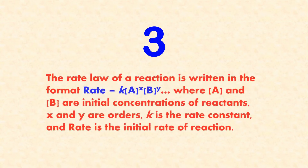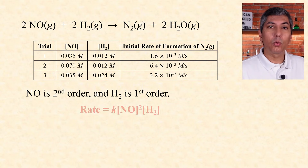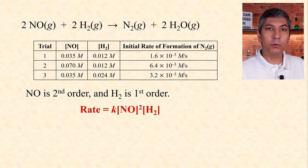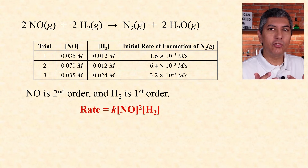Number three: the rate law of a reaction is written in the format rate = K × [A]^x × [B]^y, and so forth, where A and B are initial concentrations of reactants, X and Y are reaction orders, K is the rate constant, and rate is the initial rate of reaction. In the reaction we had before, we write the rate law as rate = K × [NO]² × [H2]¹, since NO was second order and H2 was first order.